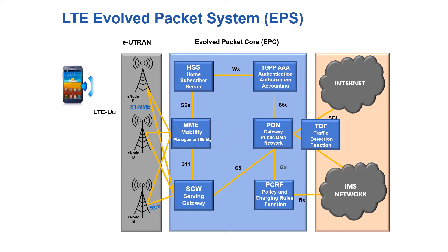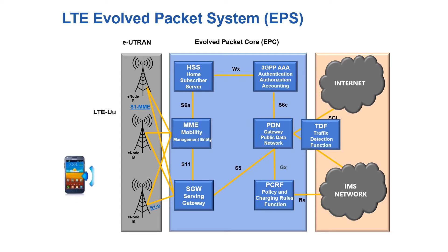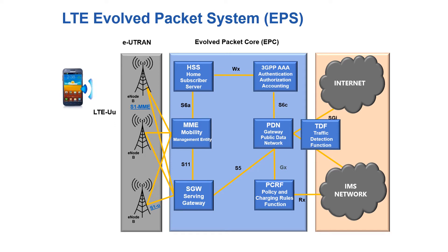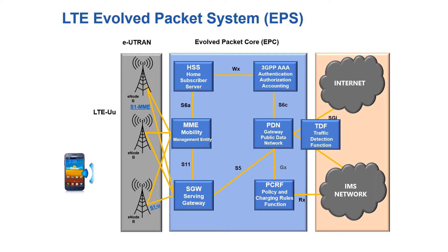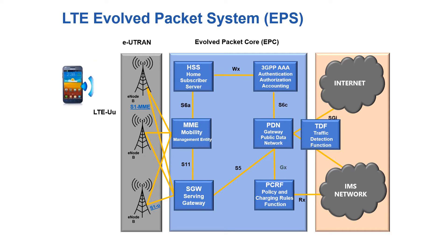Before we dive into the new 5G core, let's take a quick look at the core we're all working with today: the LTE Evolved Packet System, or EPS. The cell phone typically connects up to the eNodeB, the RF side of the network. The eNodeB connects to the MME, the Mobility Management Entity, which verifies that we're legitimate users on the network by going to the HSS and the AAA server — confirming not only that we're legitimate users, but also what types of services we can access and whether we've paid our bills.